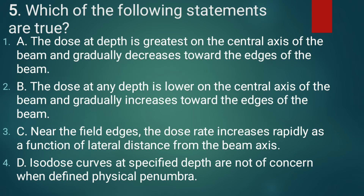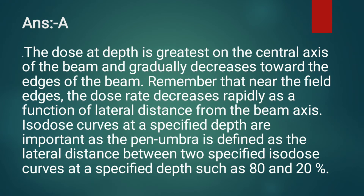Question 5: Which of the following statements is correct? The correct answer is option A. The dose at depth is greatest on the central axis of the beam and gradually decreases towards the edge of the beam. Near the field edges, the dose rate rapidly decreases as a function of lateral distance from the beam axis.